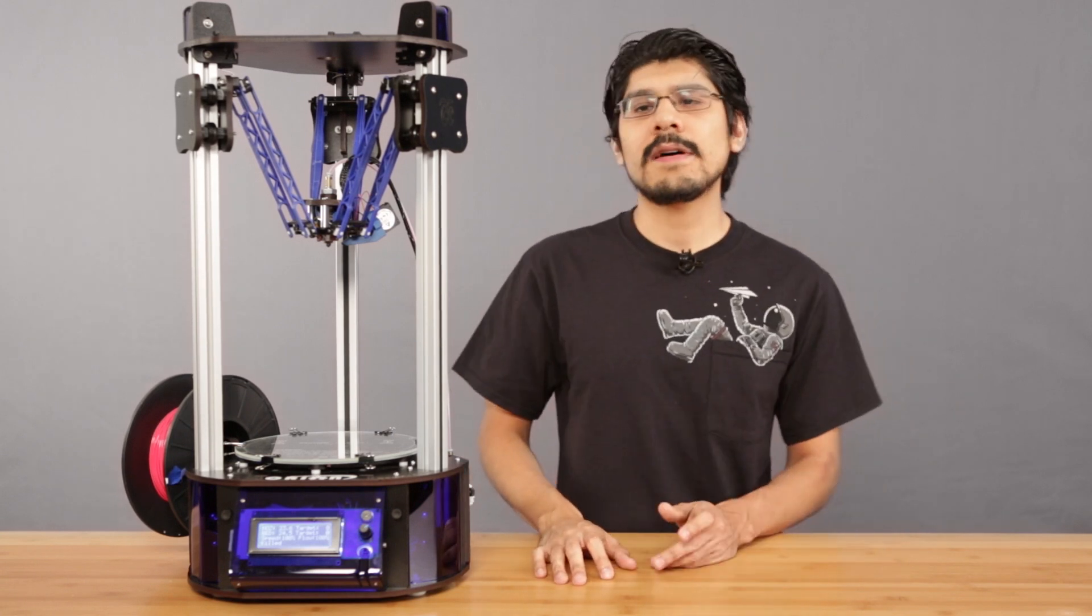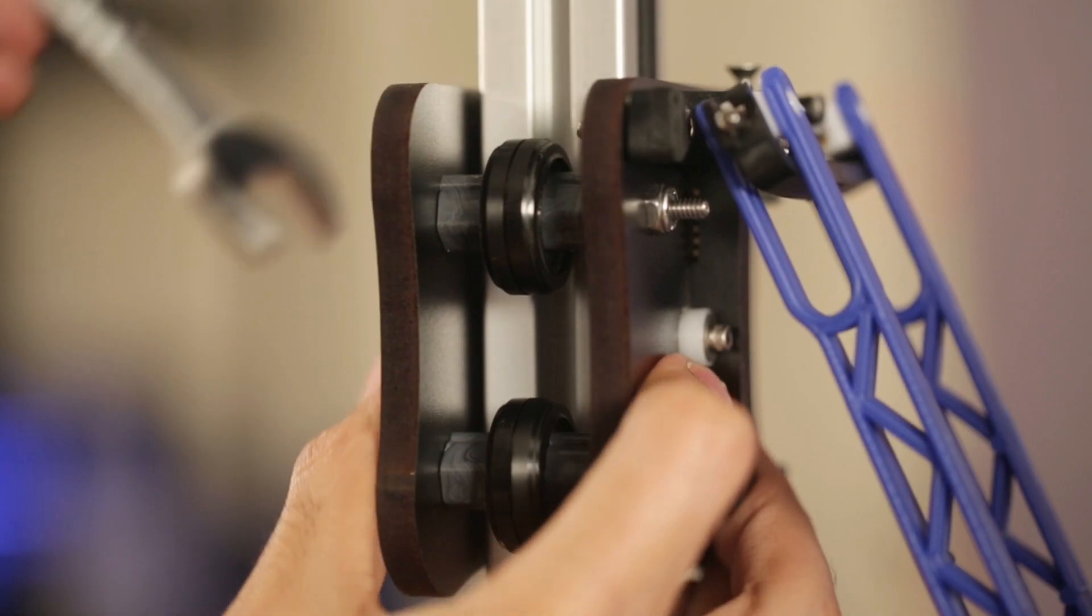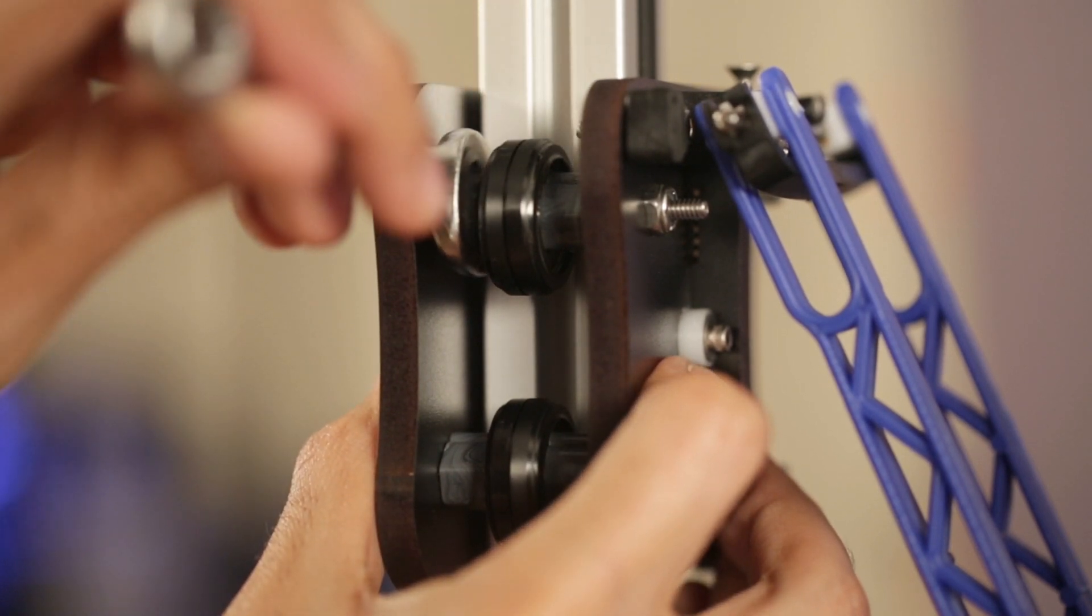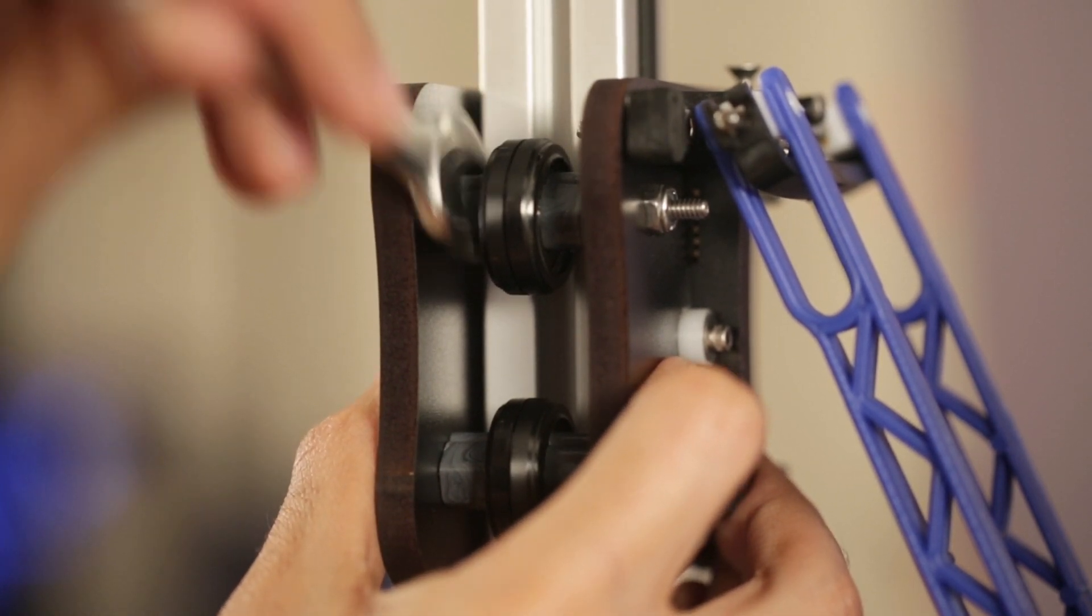When we first got the printer we found out that we had a loose cheapskate and this caused all sorts of dimensionally inaccurate prints. You definitely want to ensure that the cheapskates are tight. You can do so with a wrench to tighten the carriage.